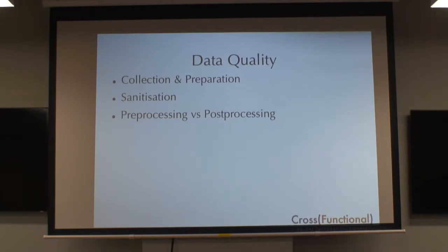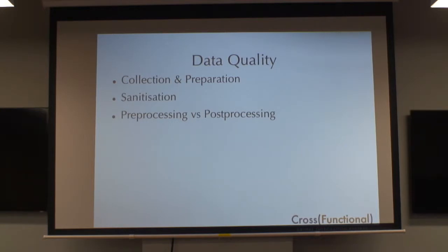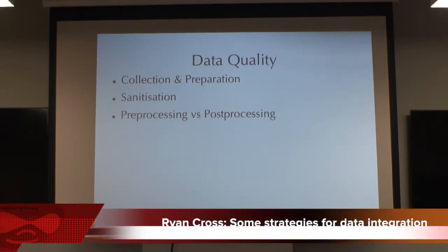The other piece in terms of data quality is whether you're going to pre-process or post-process your data. It's really important when you think about where you're going to have your computational load. Pre-processing generally means modifying your data near the actual source you're pulling it from, while post-processing means transforming or modifying your data once you've pulled it to its destination. You might find you have to do both.